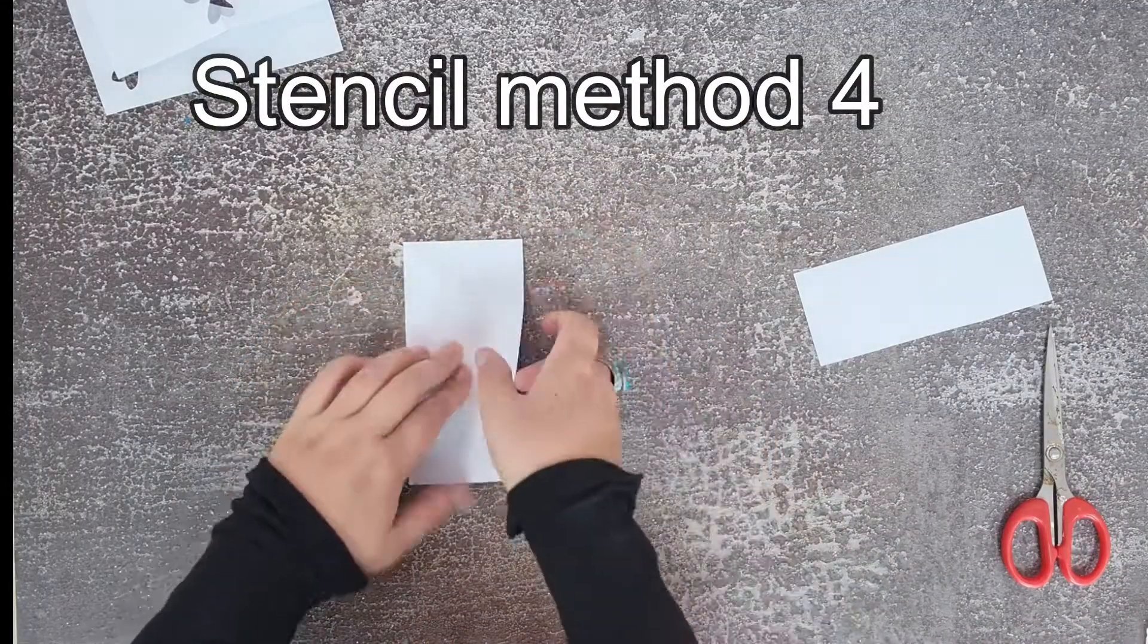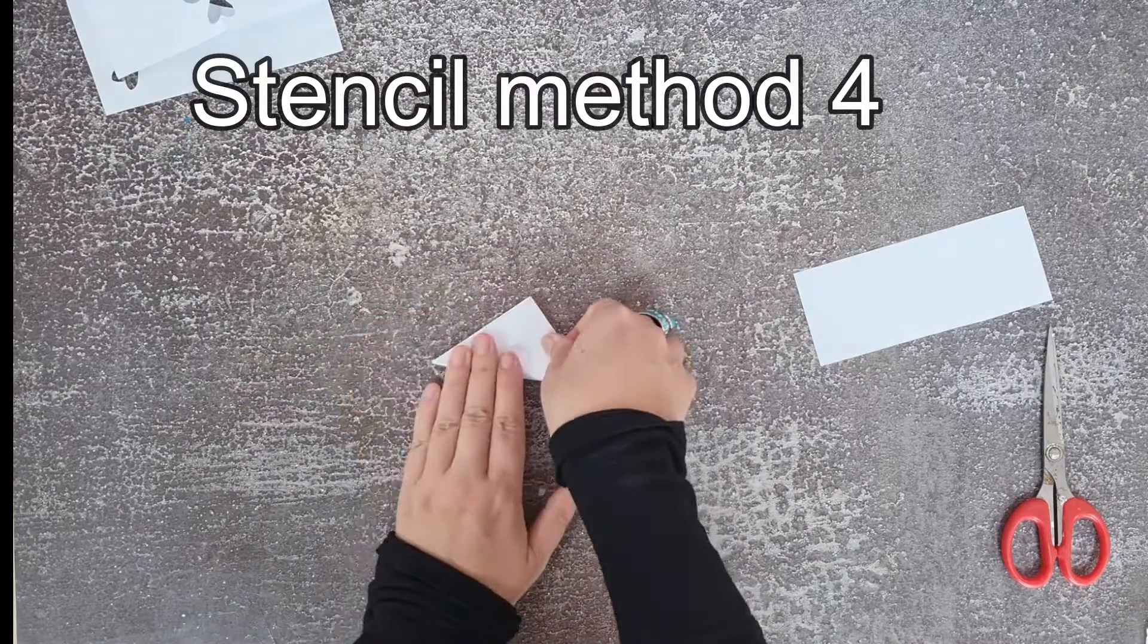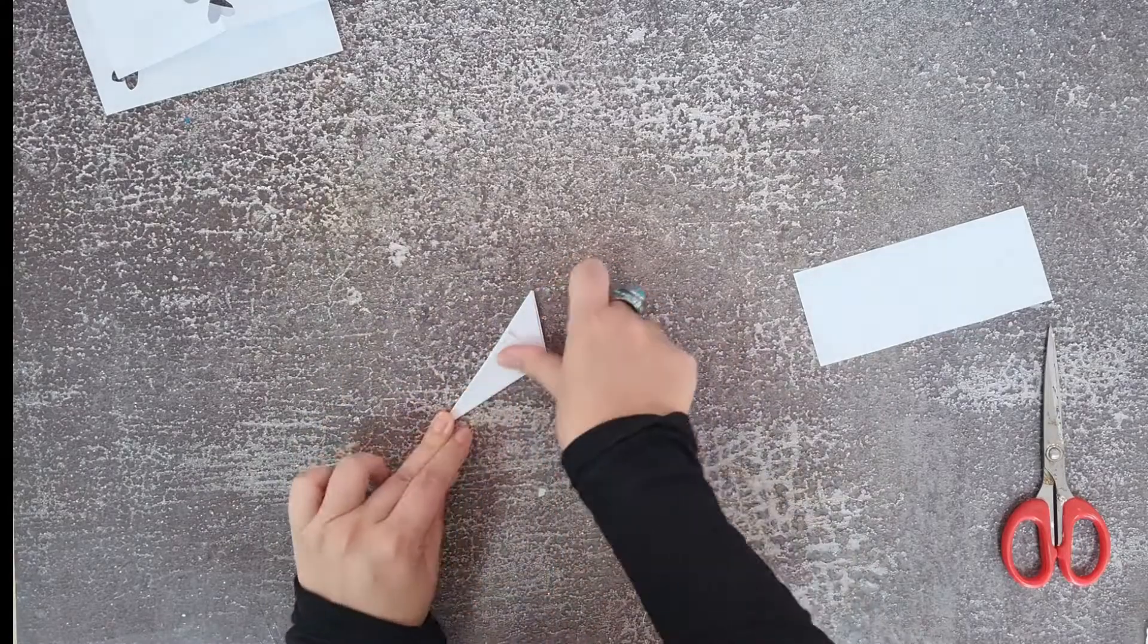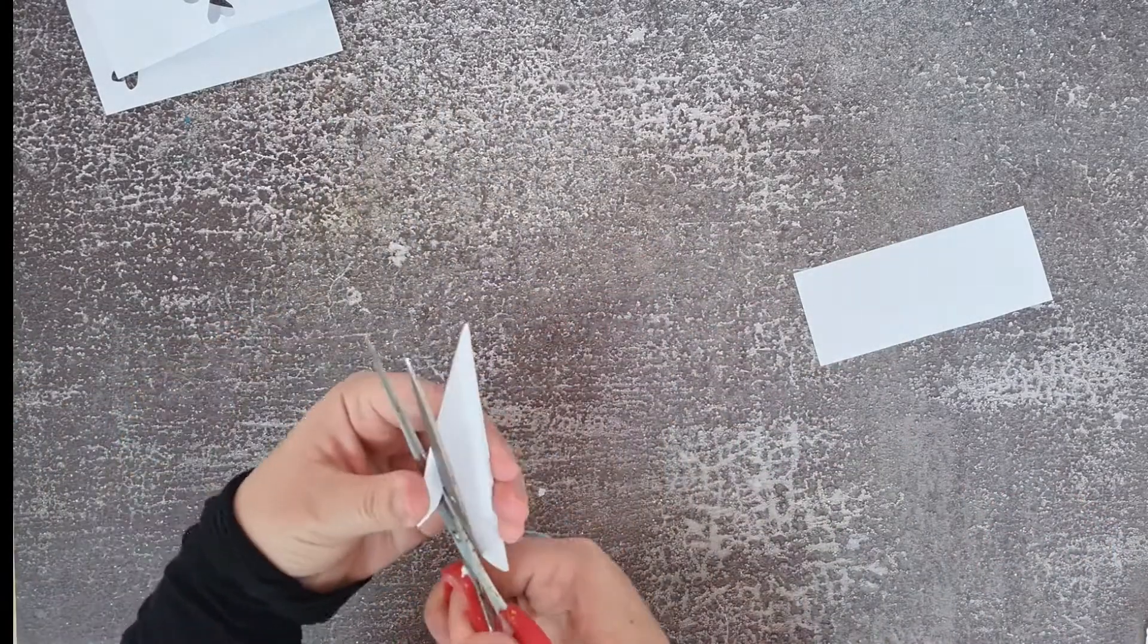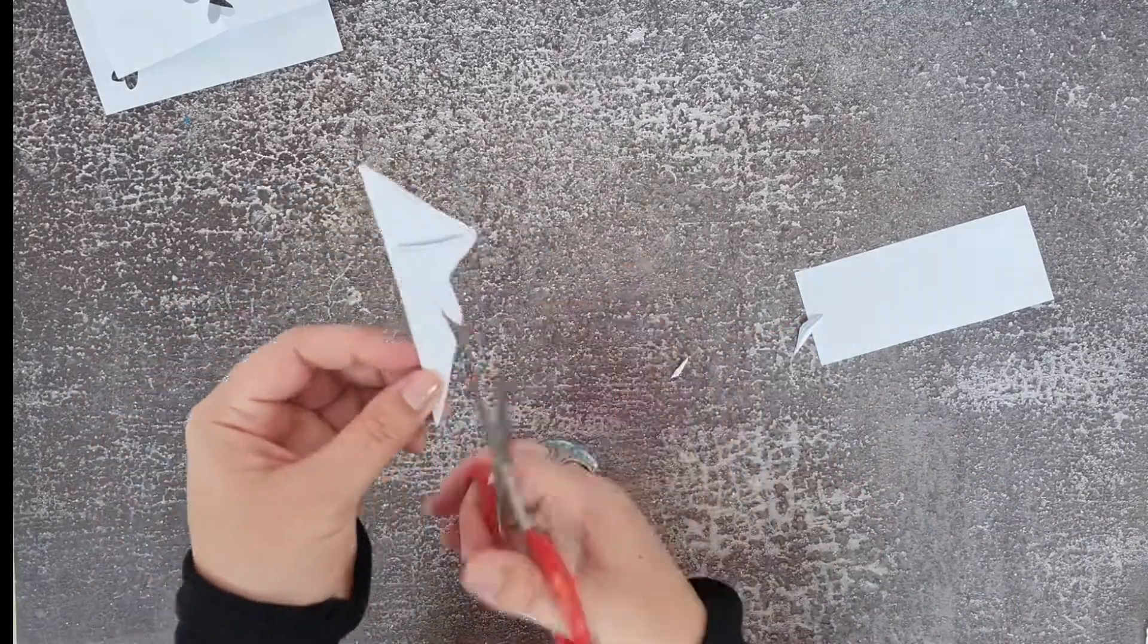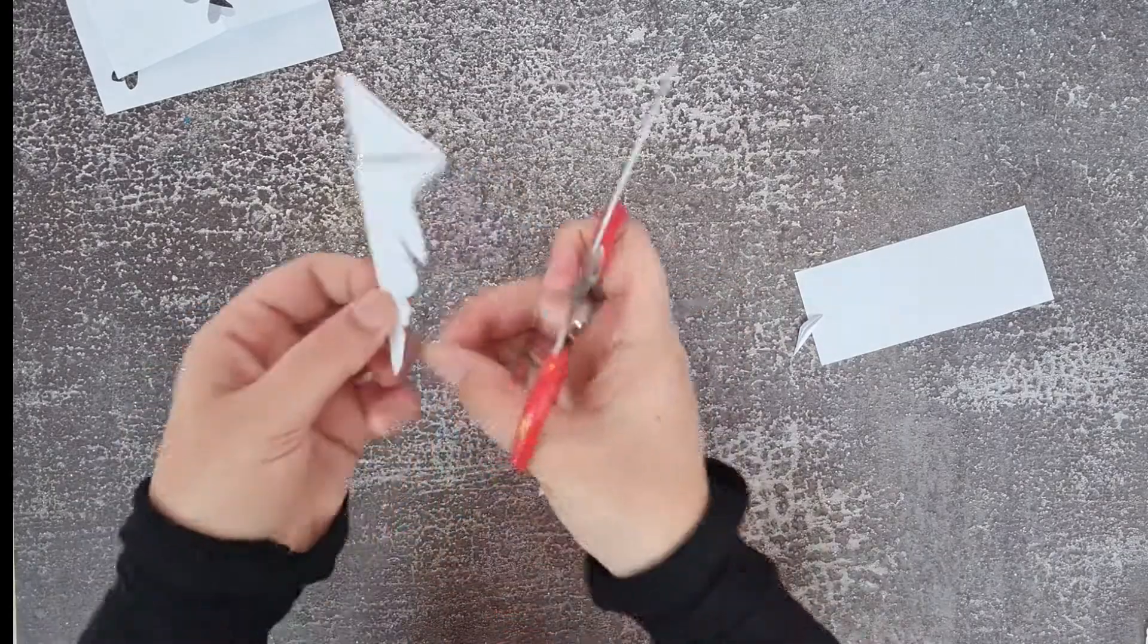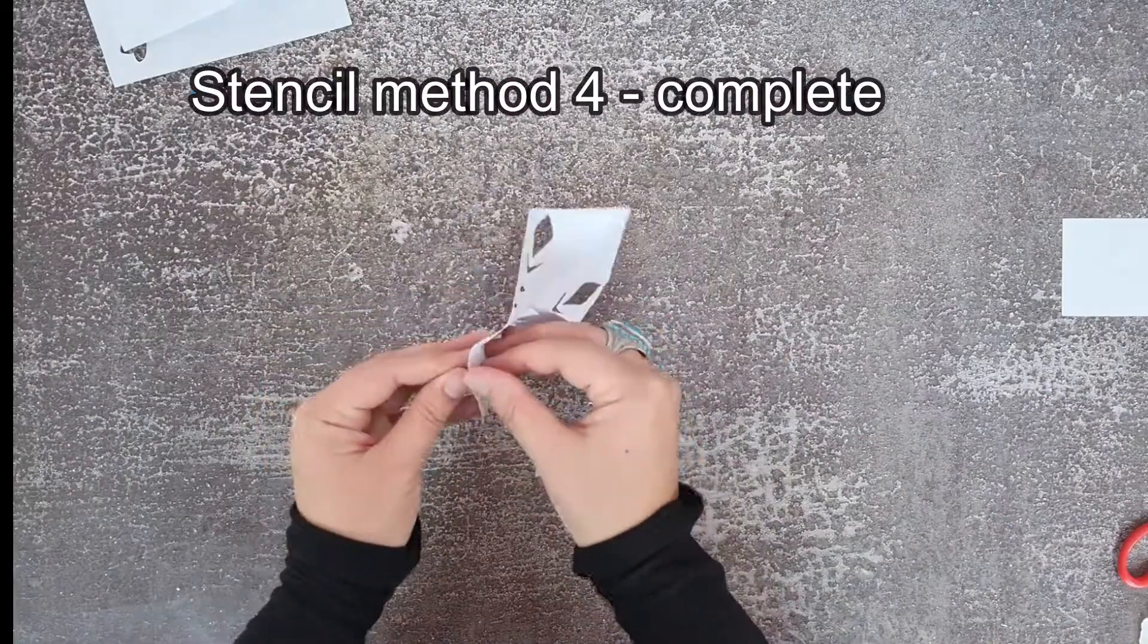To make stencil method four, fold a paper square in half to make a rectangle. Then we fold again to make a small square. Next, fold this square to make a triangle and then fold it once more to bring one side of the triangle to meet the edge neatly. As the paper is folded thicker with this method, it will be more of a challenge to cut out detailed shapes, so make them simple.